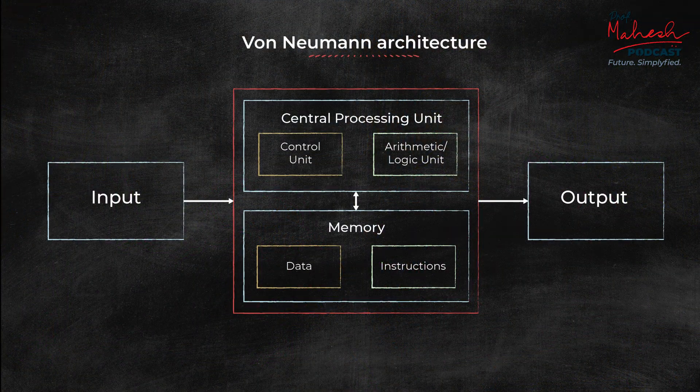Out of Turing's model of computation — a mathematical model of computation — came what is essentially the architecture of the computer we use today. The idea is that we have memory, we have instructions, and then we execute the instructions. But the instructions also sit in the memory, so there is no distinction between where your program is stored and where your data is stored. This is all a physical manifestation of Turing's theoretical computer science ideas about how computation works.